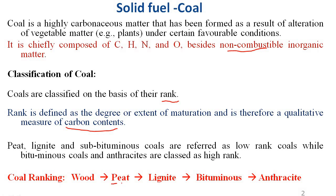In the first stage of transformation, we call it peat. Peat is a loose, light brown solid and is regarded as the first stage in the formation of coal. It contains the maximum percentage of water. It has about 57% carbon with the least calorific value of about 5400 kilocalories per kg.